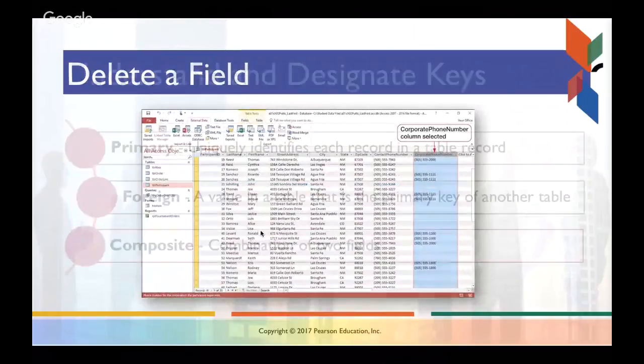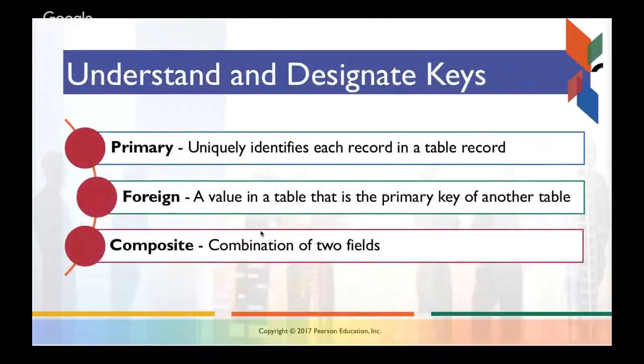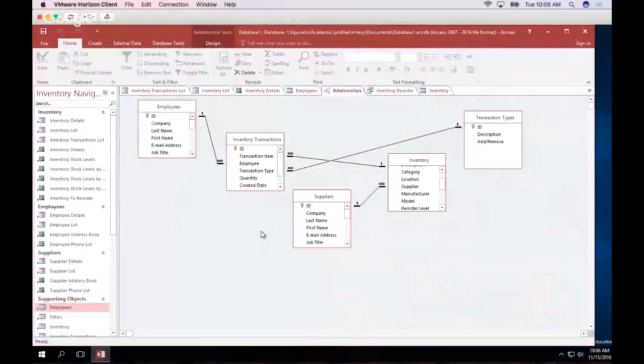Moving on. We want to talk about understanding and designating keys. So there's three types of keys. The first two are the most important for us. And this third one is an understanding that you can have a key that can consist of more than one field. So primary and foreign keys. A primary key is a uniquely identified field that identifies each record in a table. So it's a unique identifier. And a lot of times in Access, these will be auto-number fields. And then a foreign key is a value in a table that is the primary key of another table.